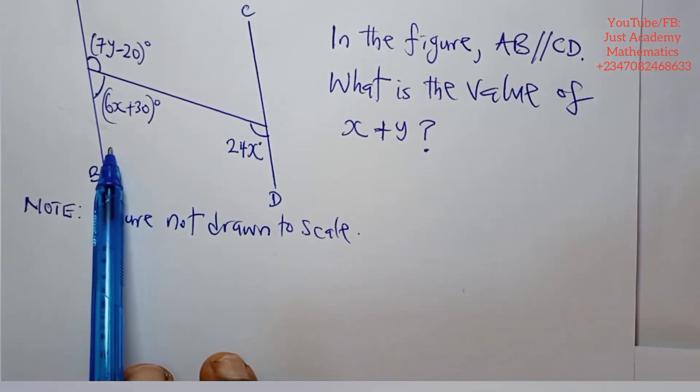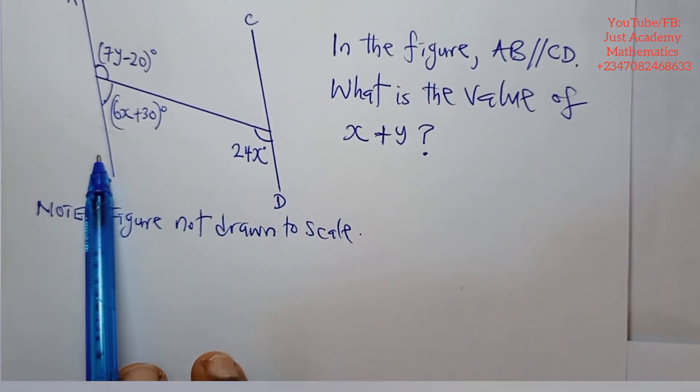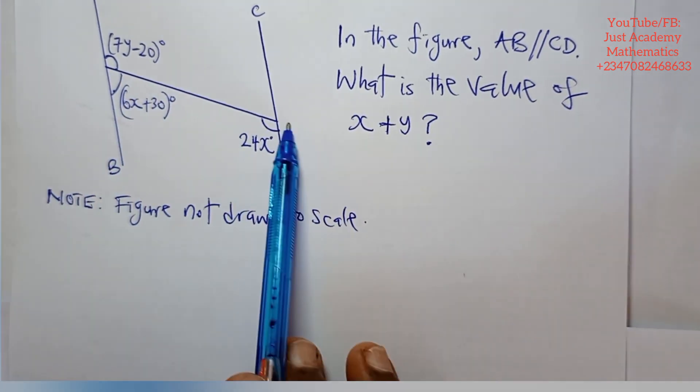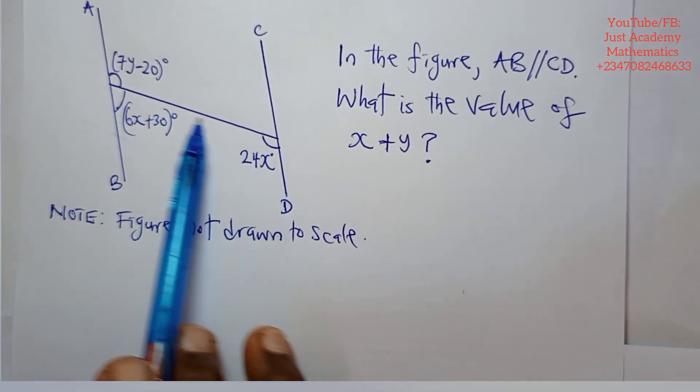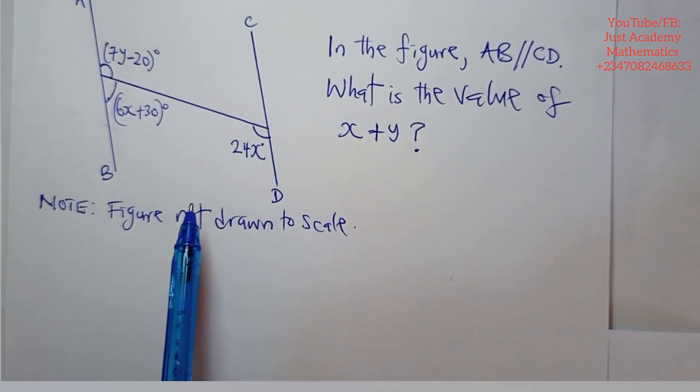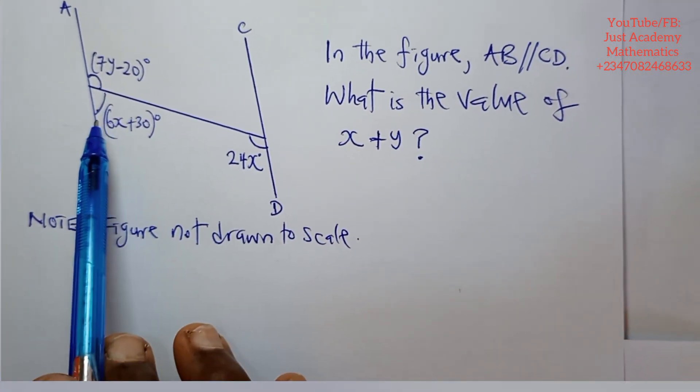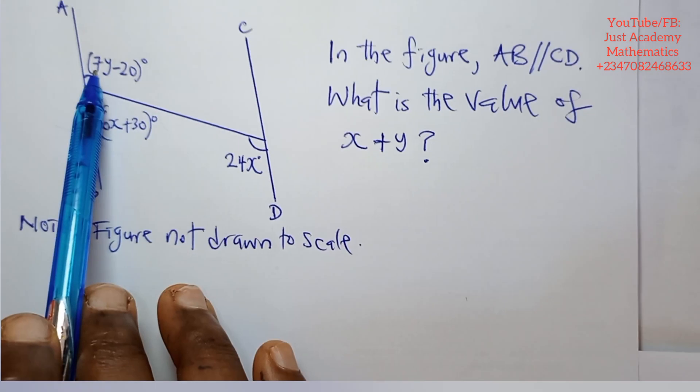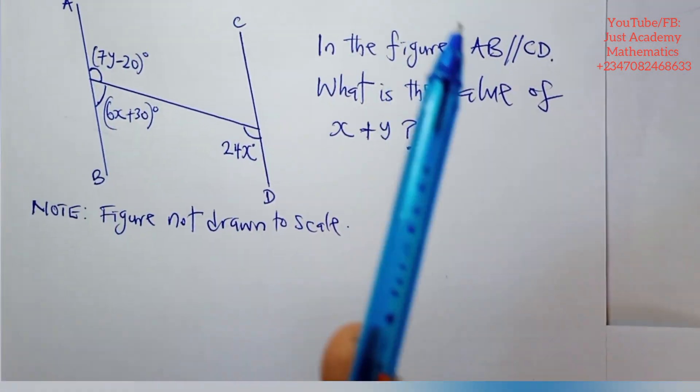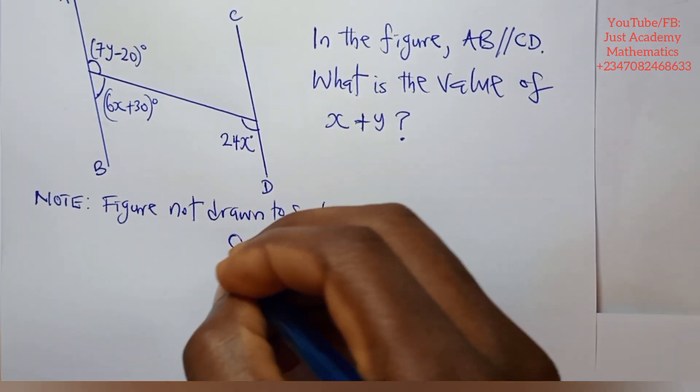These two lines are parallel. If these two lines are parallel and this is a transversal, though it is not crossed, but this is a transversal, it therefore means that this plus this is one possibility of the equation, which is this plus this is equals to 180. That is one possibility.